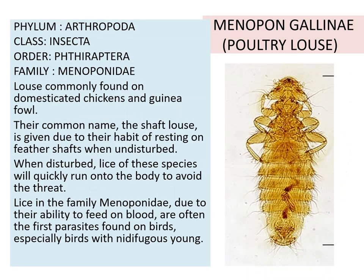The second insect is the poultry louse, that is Menacanthus gallinae. Classification includes phylum Arthropoda, class Insecta, order Phthiraptera, family Menoponidae. The louse is commonly found on domesticated chicken and guinea fowl. Their common name, the shaft louse, is given due to their habit of resting on the feather shafts when undisturbed.